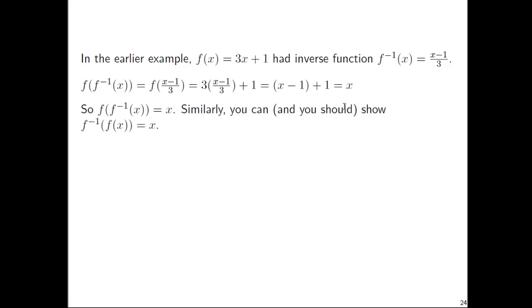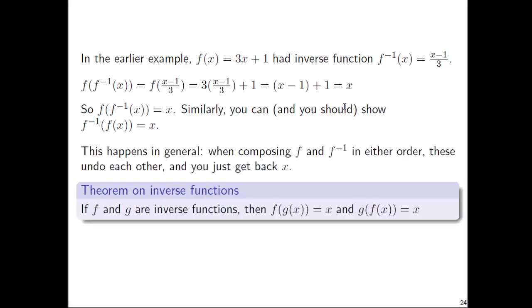It actually turns out you can show, and you should show, try it on your own, that f^(-1)(f(x)) is also equal to x. And while we're seeing it just in this example, this happens in general. That is, when you take f and you take the inverse function f^(-1), you take either those two functions, and when you compose in either order, so f(f^(-1)(x)) or f^(-1)(f(x)), these undo each other. You just get back x. So there's this theorem on inverse functions.